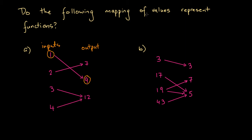So this mapping of values could be a function. Let's quickly revisit what a function is. A function is like a little box where we have an input, we put this input into the box, and the box gives us an output. If for every input the box gives us a single output, then we know that this box is a function.